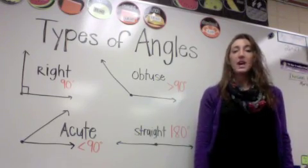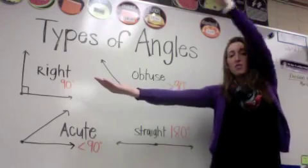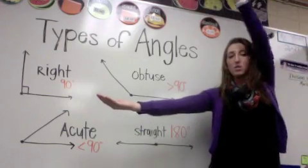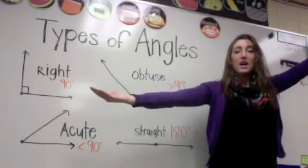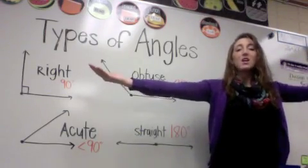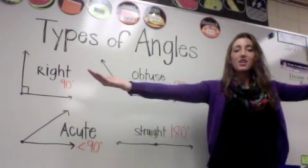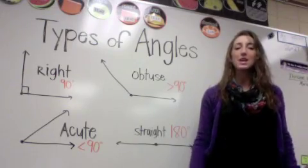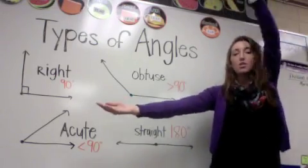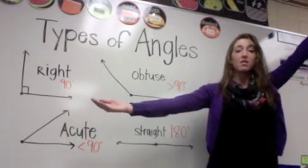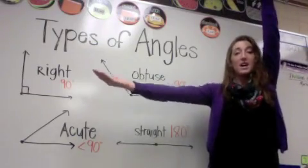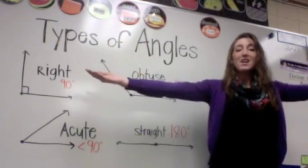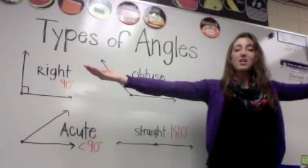The types of angles are right, acute, obtuse. The types of angles are right, acute, obtuse. A straight angle is 180 degrees. Now everybody can sing with me — right, acute, obtuse! The types of angles are right, acute, obtuse. A straight angle is 180 degrees.